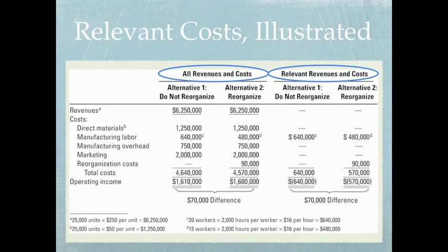In the first two columns we're listing all our revenues and all our costs, whether they change or don't change. Notice that revenues are going to stay the same under each alternative — they're not going to change. Direct materials are also going to stay the same under both alternatives. However, manufacturing labor is going to change — there's a difference between alternative one and two for manufacturing labor.